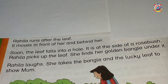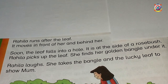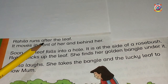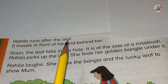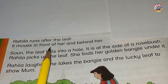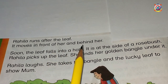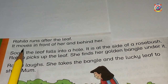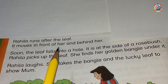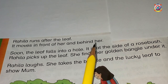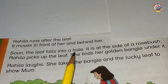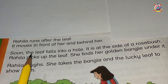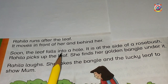Okay students, now you have to read with me. What is happening next in the story? Rahila runs after the leaf. It moves in front of her and behind her.